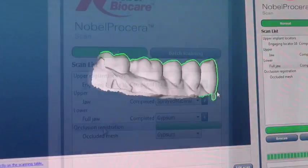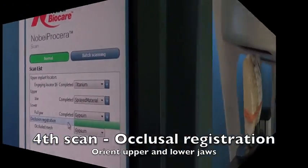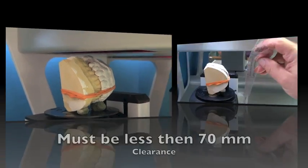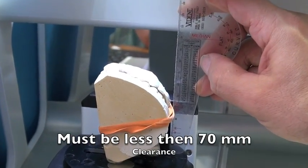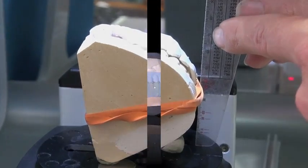Now our last scan is going to be the bite, so we're going to do an occlusal registration. We're going to take the two models, put them together with an elastic band, making sure that they're less than 70 millimeters high, otherwise it won't go underneath the scanner.